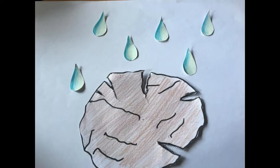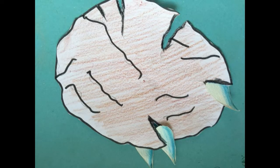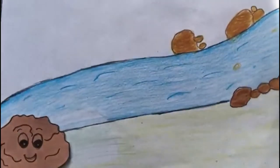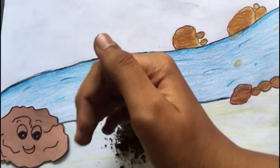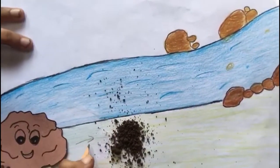Water that gets collected in the cracks of rock sometimes freezes, which helps in widening the cracks. Flowing river water helps in the wearing down of rocks over time, which results in the formation of soil.